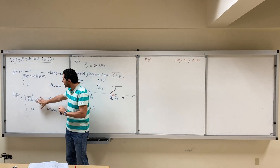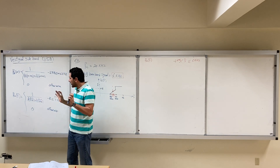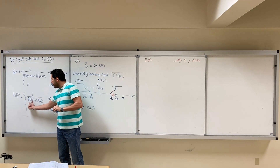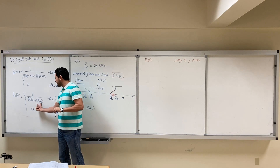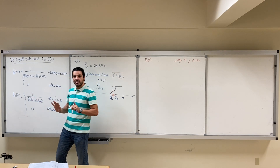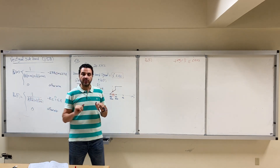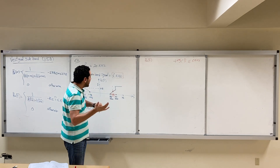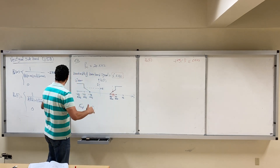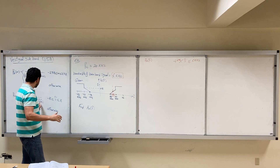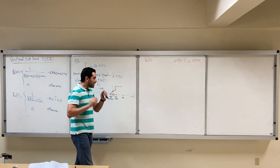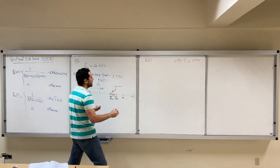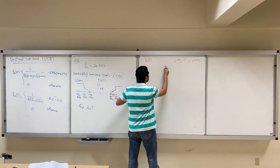To calculate H_node(f) from HI(f), we follow the equation exactly. The equation says we need to obtain HI(f minus Fc), add it to HI(f plus Fc), and after we add these two versions we take one over this summation. So let's get HI(f minus Fc), then HI(f plus Fc), add them, and then invert.